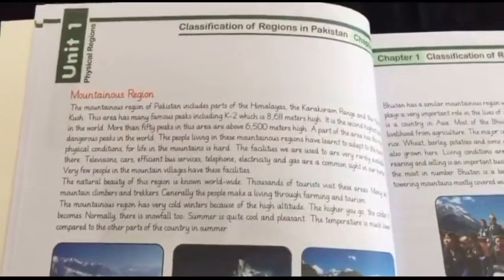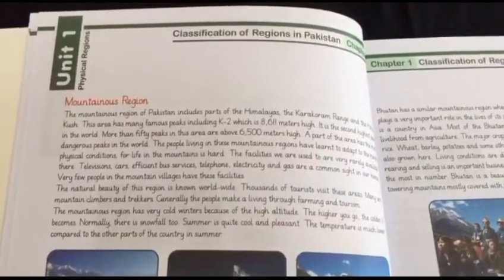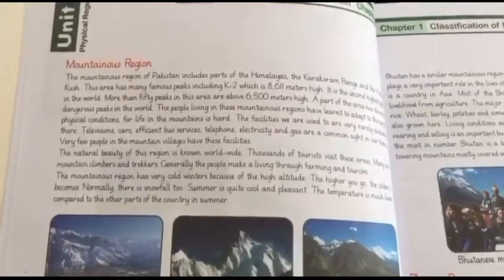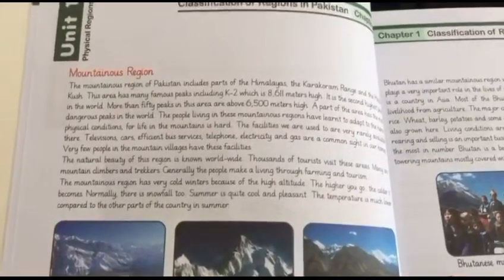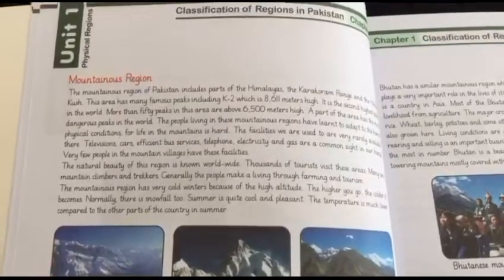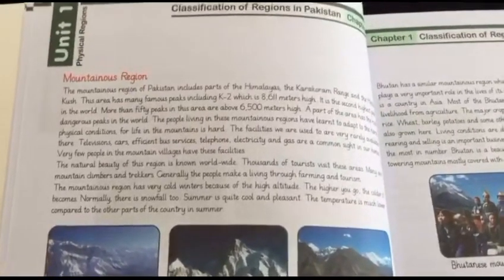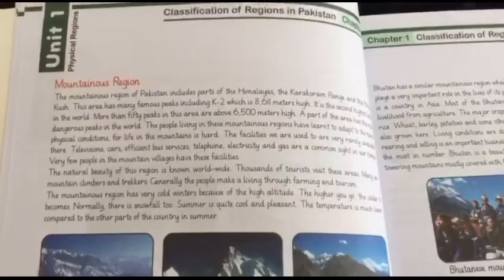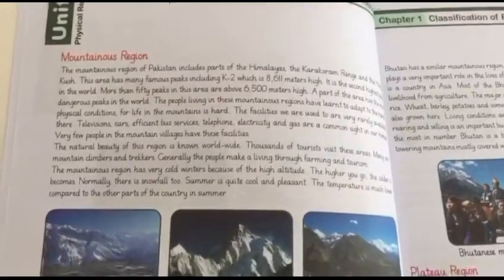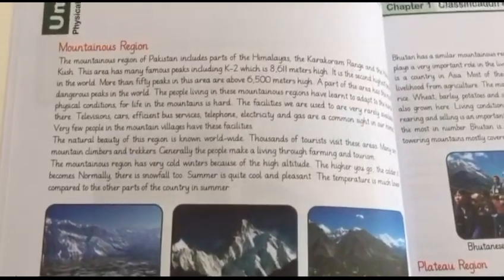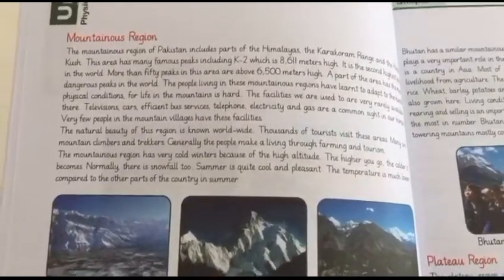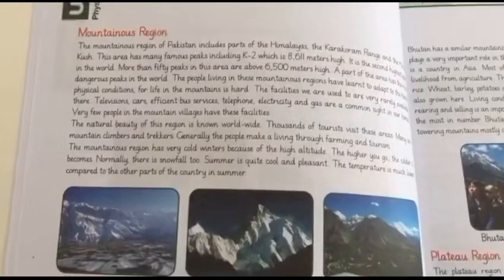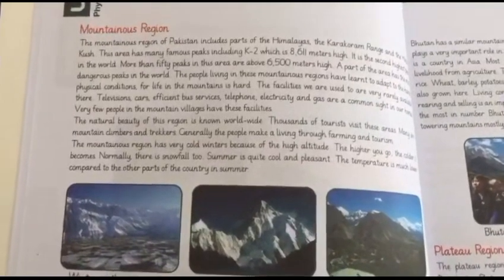Today we read about the mountainous region. Mountains are high landforms with pointed peaks, their height typically in thousands of meters — like K2 at 8,611 meters and others above 6,500 meters. The people living there face many difficulties, and they earn their living through farming, tourism, agriculture, and livestock.